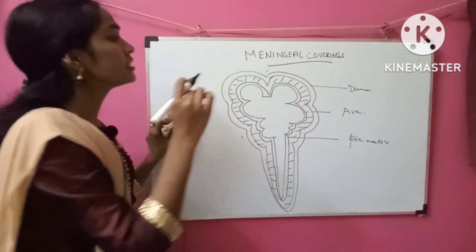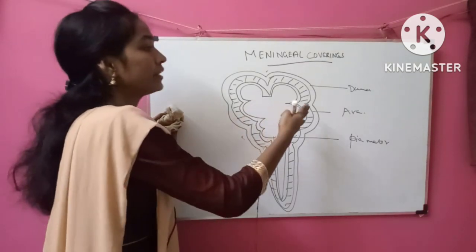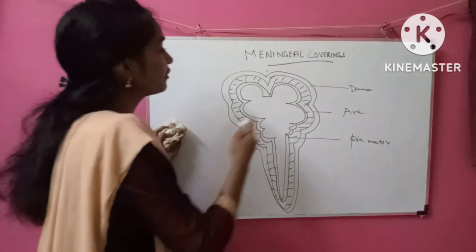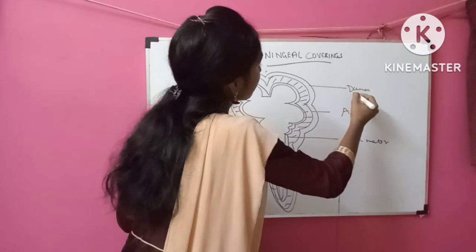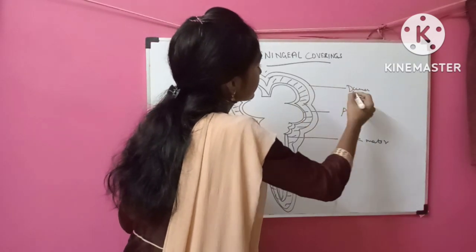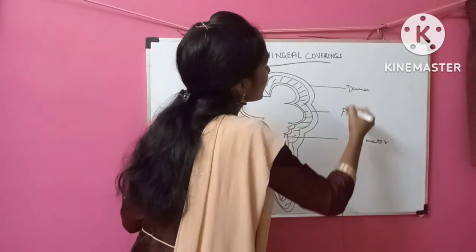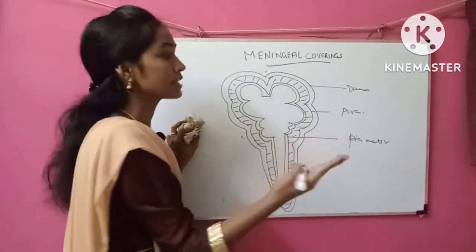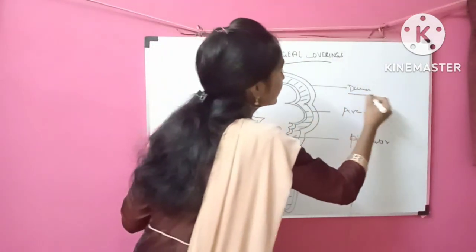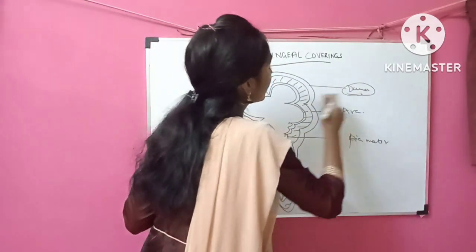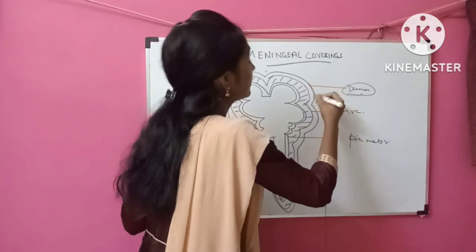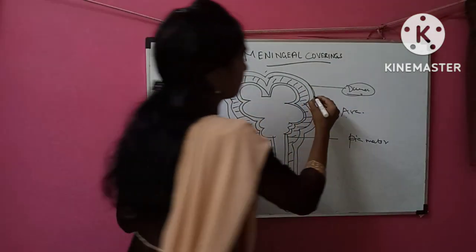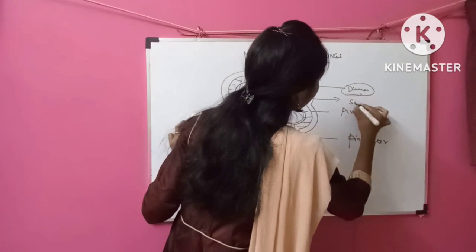Now I am going to tell you the spaces in between the three membranous coverings. If the space is between the dura mater and the arachnoid mater, then it is the subdural space — under the dura. The space is subdural space.